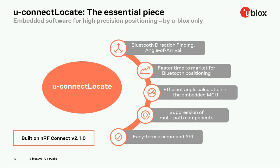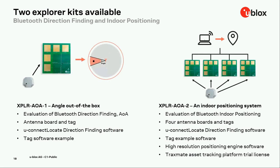Uconnect Locate has been built on the Nordic NRF Connect SDK, specifically version 2.1.0. To give customers a chance to evaluate NINA B411 and Uconnect Locate, we designed an antenna board with five antenna elements with NINA B411 integrated running Uconnect Locate software. We put this antenna board into two Explore kits. Explore AOA1 includes one antenna board and one tag for evaluating a simple direction finding system. You can move the tag and monitor the angle on a graphical user interface or via the UART output of the antenna board.